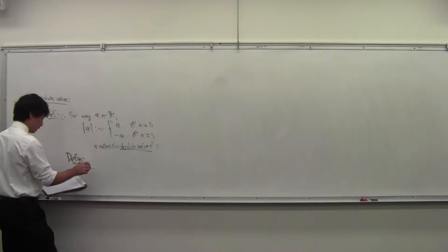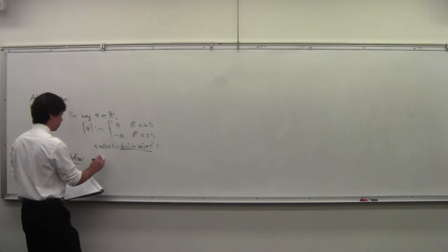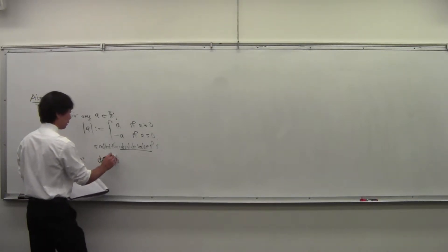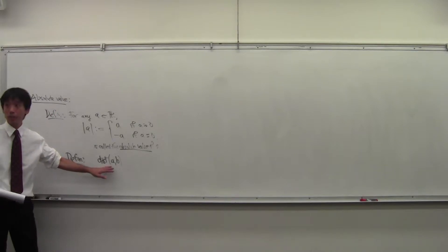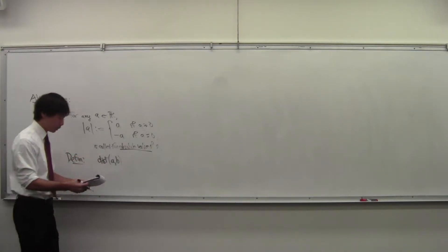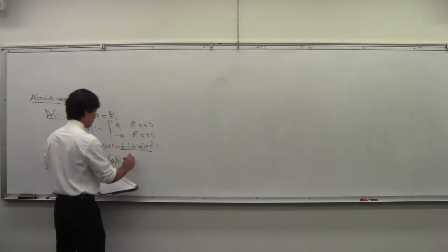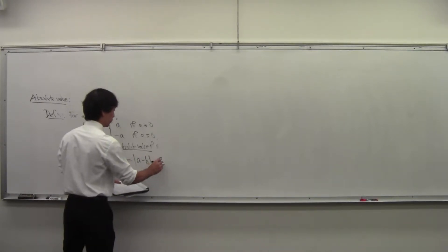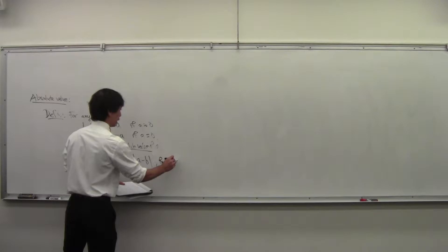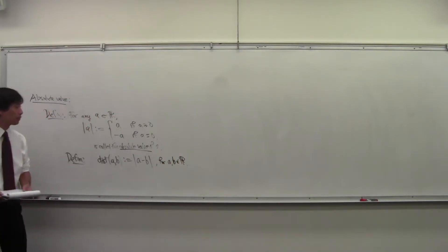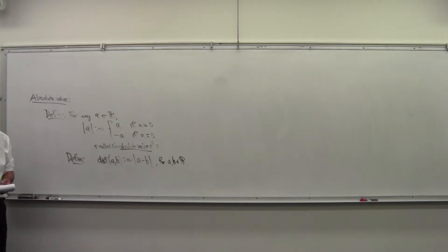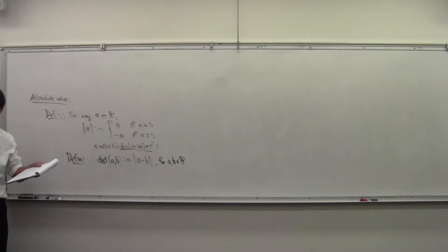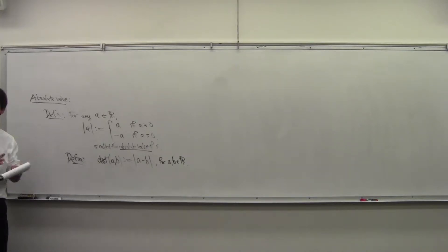Another important definition: the distance. We'll use this to denote the distance between a and b. The distance between a and b is defined to be the absolute value of the difference, for any a and b. The absolute value of the difference — you take the difference and then you take the magnitude of that difference. The magnitude of that difference is the distance between the two points.